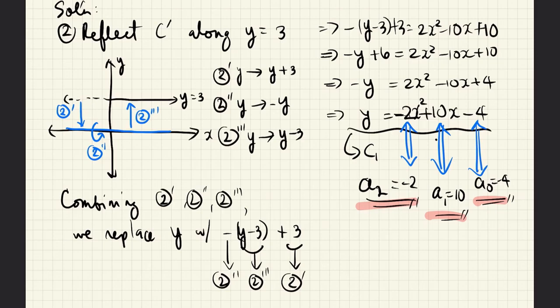And then, we reflect it around y equals 0. We do that by replacing the y's with negative y's. And finally, we move the graph back up three units. And we do that by replacing the y's with y minus 3.